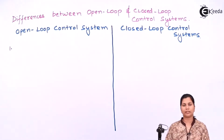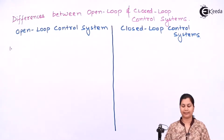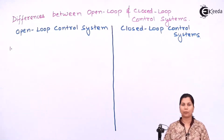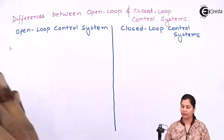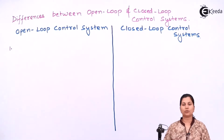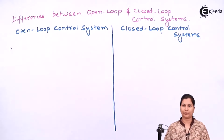The first difference between the open loop and closed loop control system is that open loop control systems are simple in construction because they have very few components. Whereas closed loop control systems are very complicated in structure because there are many elements involved, including feedback elements.